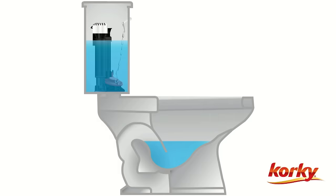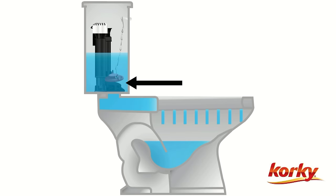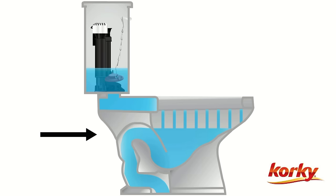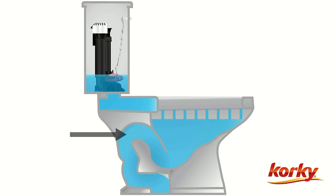When the handle is pushed it pulls up on a chain connected to a flapper. The flapper lifts and releases the tank water down the flush valve into the bowl. The water then goes through the trap and into the main drain.